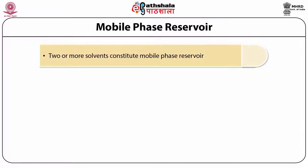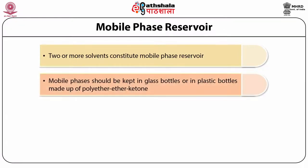Usually, most of the purification or separation in Ion Exchange Chromatography uses two to three mobile phases. These mobile phases are kept in glass bottles or in plastic bottles made up of polyether ether ketone, popularly known as PEEK. PEEK is used as it is chemically inert to most organic solvents. This is necessary as the mobile phases contain charged ions which may damage normal plastic bottles. Prior to using the mobile phase reservoir, degassing of solvents is very important. If it is not done, it may result in sharp spikes in the chromatogram.